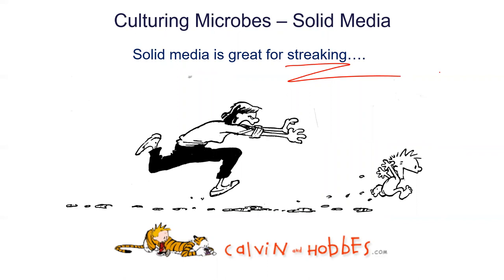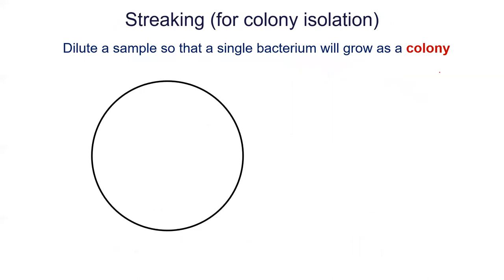Here's a word of advice: when you're on Google images looking for something, just think about what you're typing in. I was looking for images of streak plates and typed in 'streaking' — instead of getting microbiology stuff, I got the Super Bowl. We're not talking about that kind of streaking; we're talking about agar plate streaking.